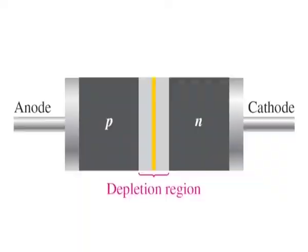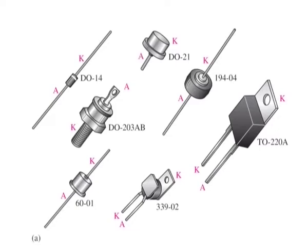A diode is made from a small piece of semiconductor material, usually silicon, in which half is doped as a P region and half is doped as an N region, with a PN junction and depletion region in between. The P region is called the anode and is connected to a conductive terminal. The N region is called the cathode and is connected to a second conductive terminal.